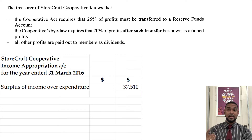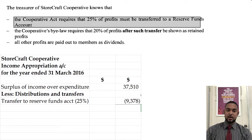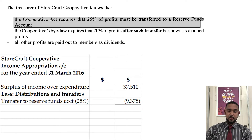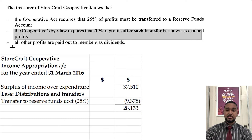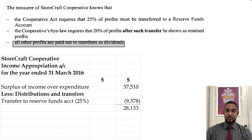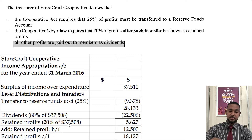We bring down the same surplus of income over expenditure from above. The Cooperative Act requires that 25% of such profits be transferred to a reserve funds account, so we have less distributions and transfers — transfer to reserve. I rounded this off because the number isn't perfectly divisible by four, so I rounded it to 93.78. That leaves a remaining balance. Then 20% of the profits after such transfer are shown as retained earnings, meaning the remaining 80% of that figure is paid out as dividends. So we pay dividends first — that leaves us with 56.27, which you can double-check as 20%. Then we add retained earnings from the previous year, giving us retained profits carried forward.